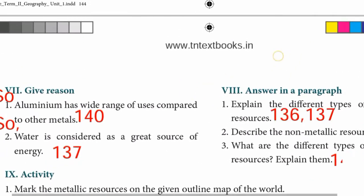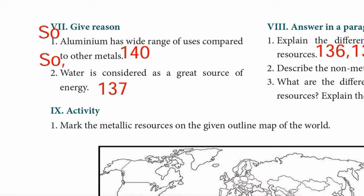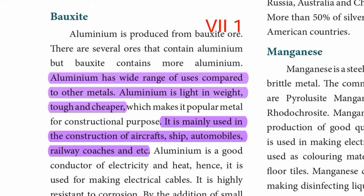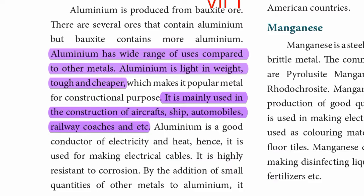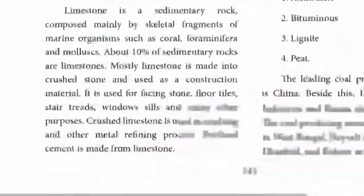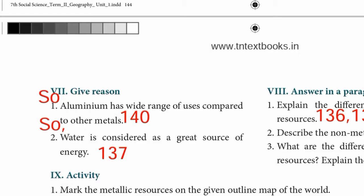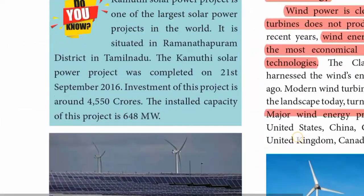On page 145, Roman numeral 7, 'Give Reason' - first one: Aluminium has a wide range of uses compared to other metals. Referring to page 140, under the bauxite and aluminium topic: aluminium is light in weight, tough and cheaper. It is mainly used in the construction of aircrafts, ships, automobiles, railway coaches, and so on. That is the answer for: aluminium has a wide range of uses compared to other metals.